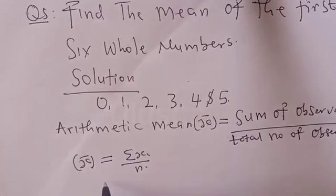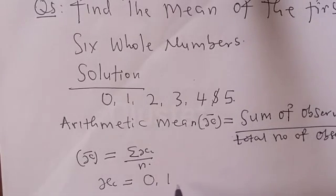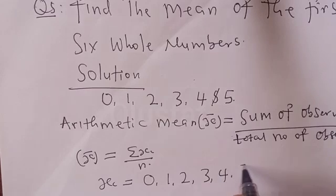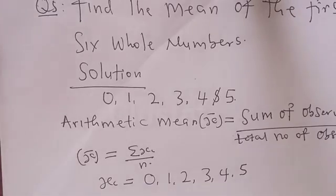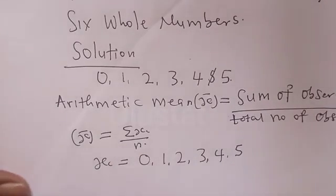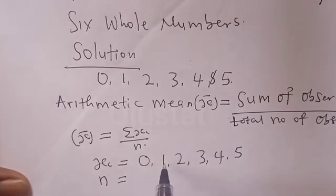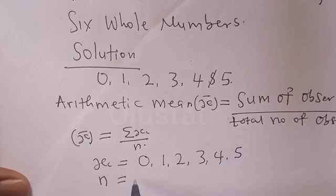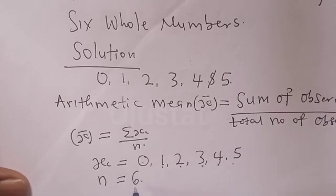Our x-i values are 0, 1, 2, 3, 4, 5 — that is the first 6 whole numbers. And n is equal to 6, since we count 1, 2, 3, 4, 5, 6 — that is 6 observations.